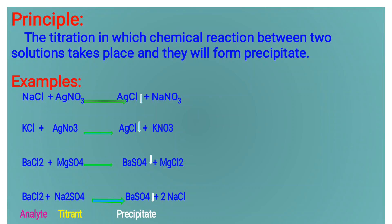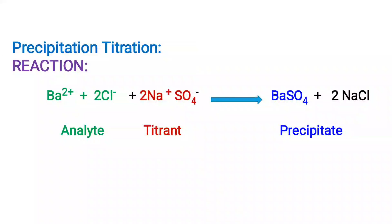Barium chloride and sodium sulfate gives barium sulfate and sodium chloride. Barium chloride is an analyte and sodium sulfate is titrant. Barium sulfate is a precipitate. Now, we have taken the example of barium chloride and sodium sulfate. Precipitation titration. The reaction is given by barium chloride and sodium sulfate. Barium sulfate is a precipitate and sodium chloride is formed.